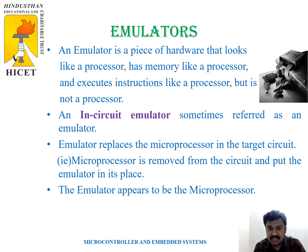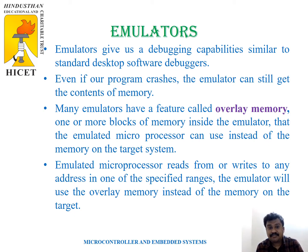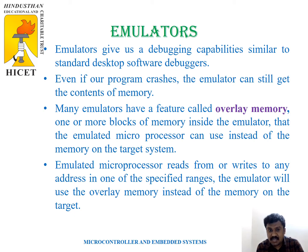If the processor gets a fault, then immediately it is replaced by the emulator, so whatever the processor will function, the same functioning is done by the emulator. This emulator gives us debugging capabilities similar to standard desktop software debuggers. Even if the program crashes, the emulator still retains the contents of memory. Many emulators have a feature called overlay memory — blocks of memory present inside the emulator that the emulated processor can use instead of the memory on the target. The processor either reads from or writes to any address in one of the specified ranges.